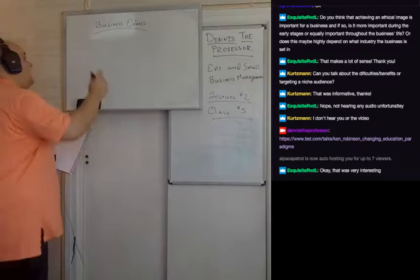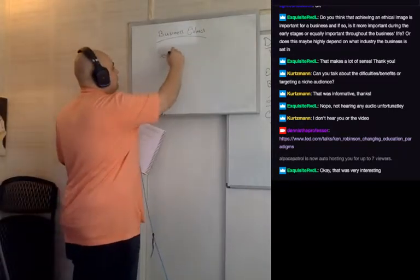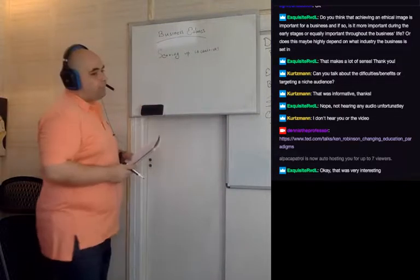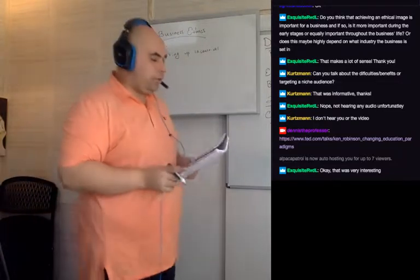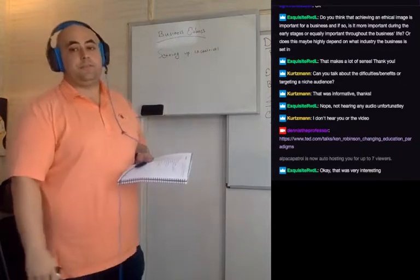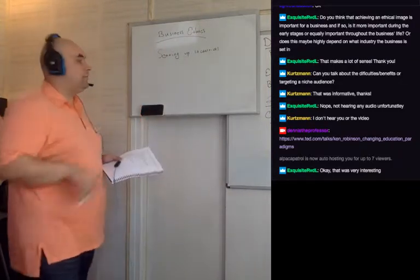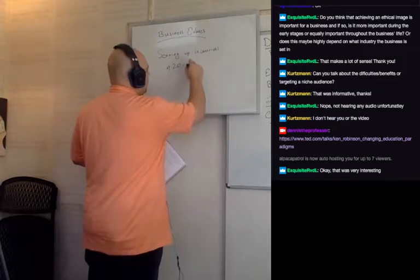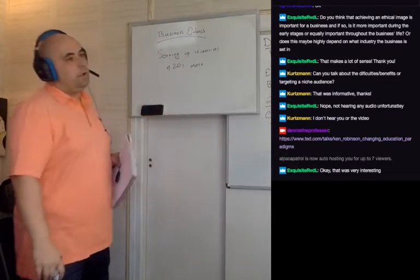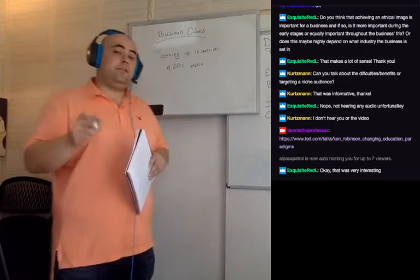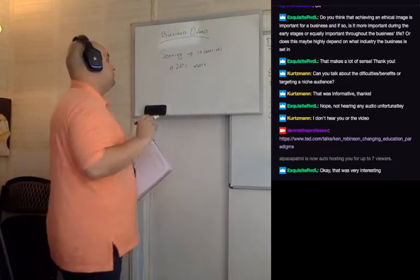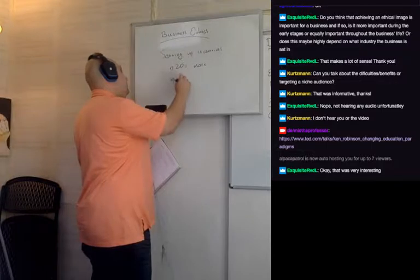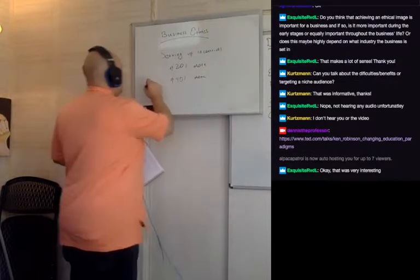The second thing you want to worry about is setting up incentives. For example, let's say you run a pizza shop and you want to sell more drinks. You tell your employees to push the drinks — maybe you get a result, maybe you sell 20% more drinks just by telling them. But what if instead, every drink costs a dollar and you told your employees that every time they sold a drink they would get 25 cents? Now your drink sales may go up by 40 or 50%. That's the difference between a command and an incentive.